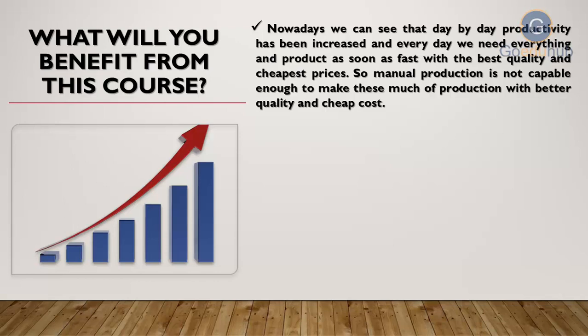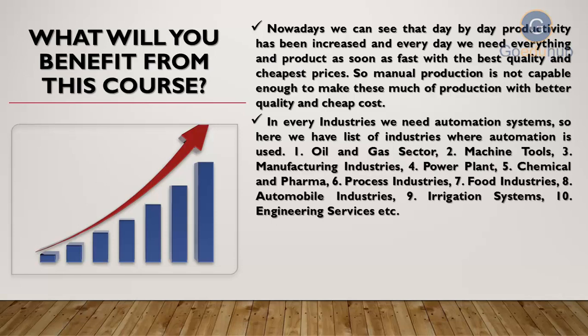PLC is the brain in most industrial automation processes. Automation is used in every industry, including oil and gas, machine tools manufacturing, power plants, chemical and pharma process industries, food industries, automobile industries, irrigation systems, and engineering services.